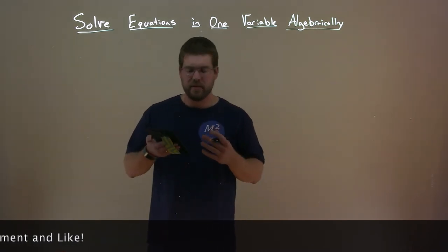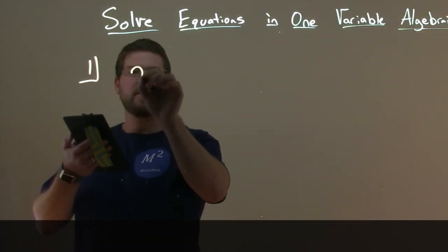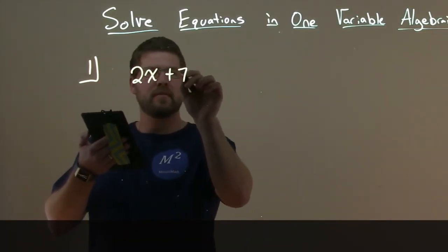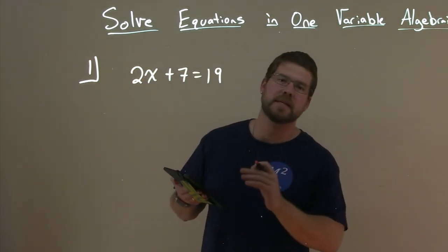So let's go solve one of these on the first example here, and we're given 2x plus 7 equals 19.